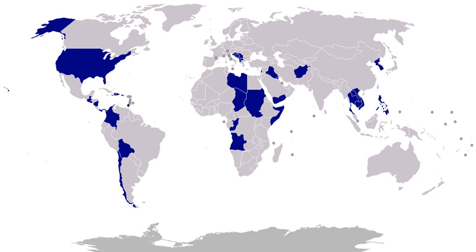1853–1854, Japan: Commodore Matthew Perry and his expedition made a display of force leading to the opening of Japan. 1853–1854, Ryukyu and Bonin Islands: Commodore Matthew Perry on three visits before going to Japan and while waiting for a reply from Japan made a naval demonstration, landing Marines twice, and secured a coaling concession from the ruler of Naha on Okinawa. He also demonstrated in the Bonin Islands with the purpose of securing facilities for commerce. 1854, China, April 4–June 17: American and English ships landed forces to protect American interests in and near Shanghai during Chinese civil strife. 1854, Nicaragua, July 9–15: naval forces bombarded and burned San Juan del Norte to avenge an insult to the American minister to Nicaragua.